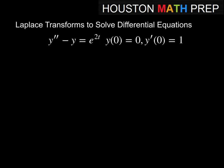Our first equation we're going to solve is y double prime minus y equals e to the 2t — a second order equation. We're given two conditions: we know what y of 0 is and we know what y prime of 0 is.